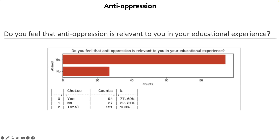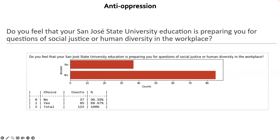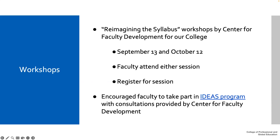We also surveyed students. When asked 'Do you feel anti-oppression is relevant to you in your educational experience?' — about 78 percent said yes and 22 percent said no. When asked 'Do you feel your SJSU education is preparing you for questions of social justice or human diversity in the workplace?' — about 70 percent said yes and 30 percent said no.